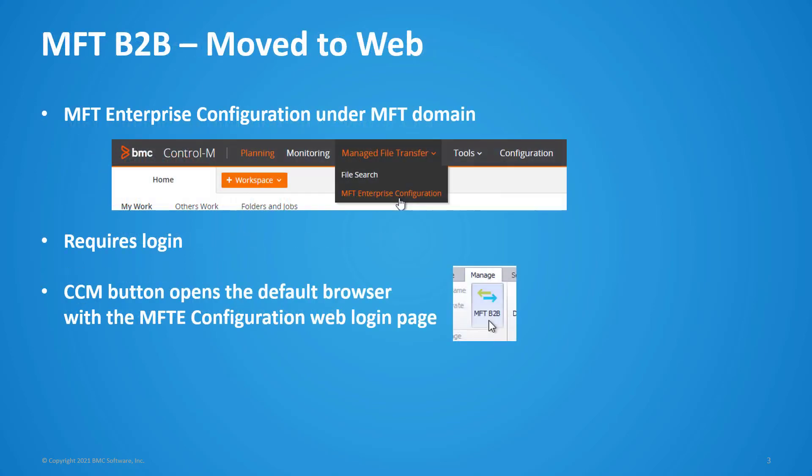Users can now select multiple files to download or delete from the file exchange web portal. The MFT enterprise configuration, also known as MFT B2B dialogue, is now only available on web browser. It requires a separate login operation, and you can access it from the Ctrl M web or from the old CCM ribbon button.